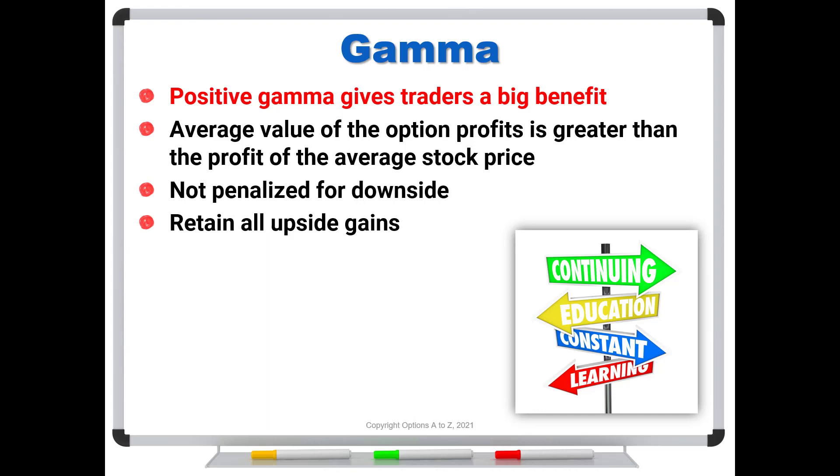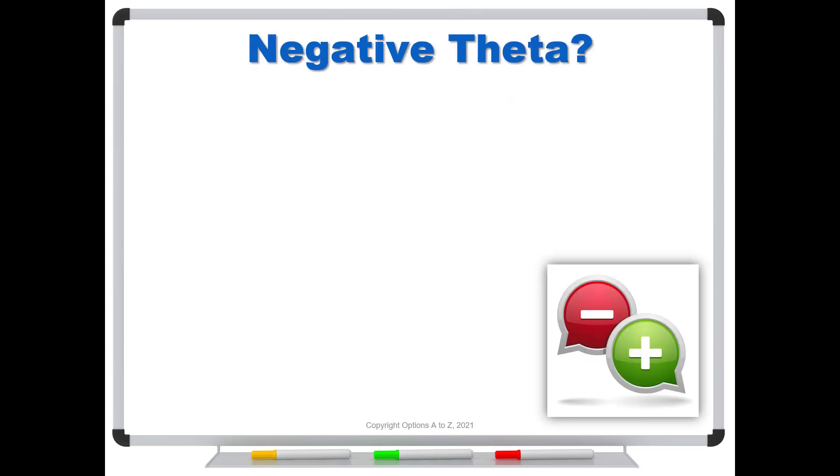Now, unfortunately, too many times traders say, oh, whenever you buy an option, you have to watch about theta. And they continually pound the table about negative theta. And you've got to close before you lose 100%, or that you only want to be an option seller because of theta. And they don't realize, again, that positive gamma is a benefit.